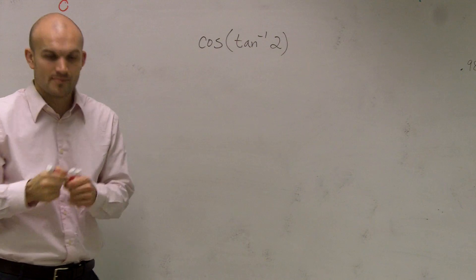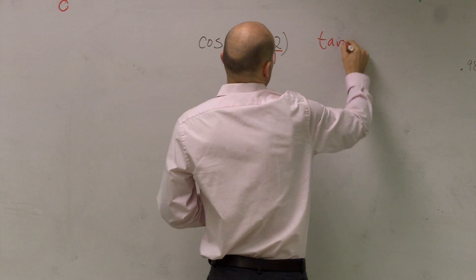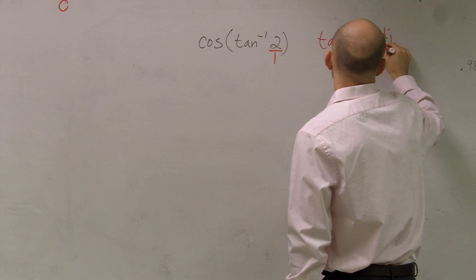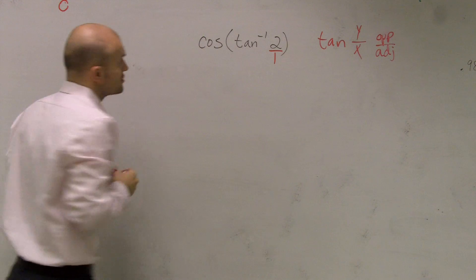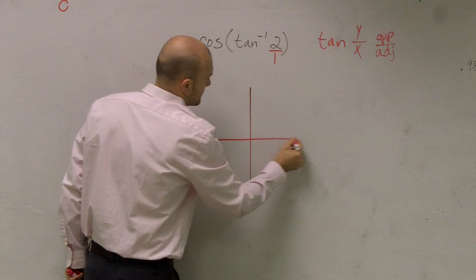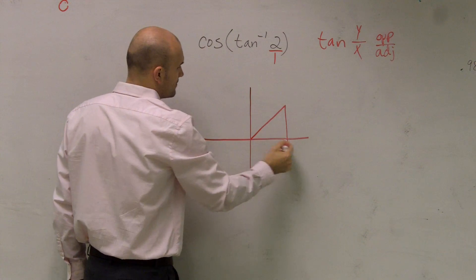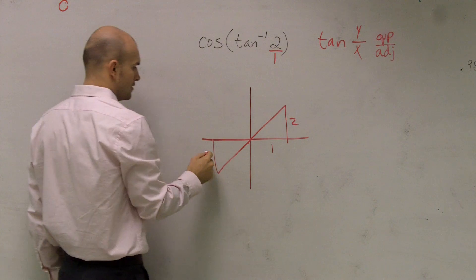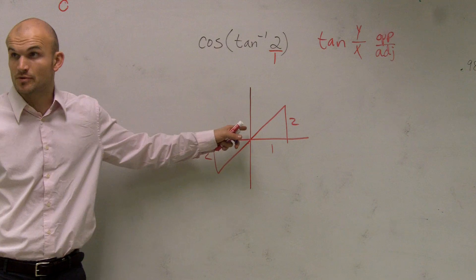So, tangent of 2... Remember, tangent means that as 2 over 1, right? And tangent represents my y over my x or my opposite over adjacent. So, I need to draw a triangle that's going to give me a positive 2. We could do 2 over 1, or we could also have negative 2 and negative 1, right? Because a negative divided by a negative gives you a positive, correct?